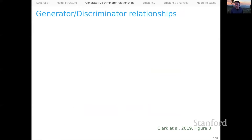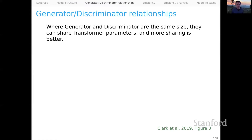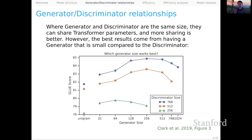One thing I really like about the ELECTRA paper is that it offers a really rich set of analyses of the efficiency of the model and of its optimal design. I'm going to highlight some of those results here, starting with the generator-discriminator relationship result. The authors observed that where the generator and discriminator are the same size, they can share all their transformer parameters — they can kind of be one model in essence. They find that more sharing is indeed better, which is encouraging. However, they also observed that the best results come from having a generator that is small compared to the discriminator.